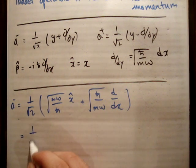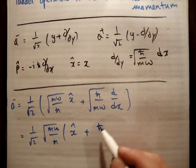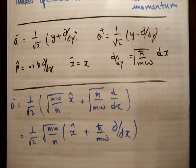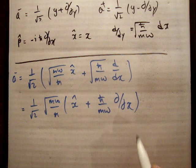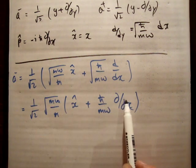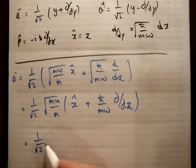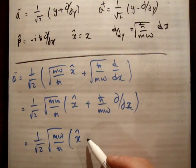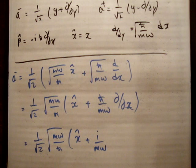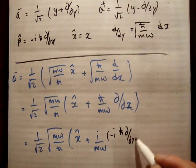We get 1 over root 2 times √(mω/ℏ) times x̂, plus √(ℏ/mω) ∂/∂x inside. To get the momentum operator, we multiply above and below by i, because p̂ = −iℏ ∂/∂x. So we introduce a factor of i, writing it as plus (i/mω) times (−iℏ ∂/∂x), which is exactly p̂.